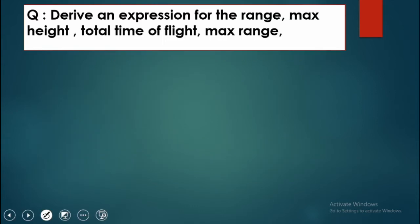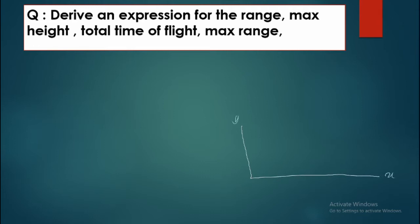Now we have to derive the expressions for projectile motion. First, understand the diagram: we have an x-axis and y-axis, and the projectile is launched at an angle theta. The projectile covers a horizontal range, and this maximum height is labeled H. The total time is divided such that half the time goes upward and half comes back down.